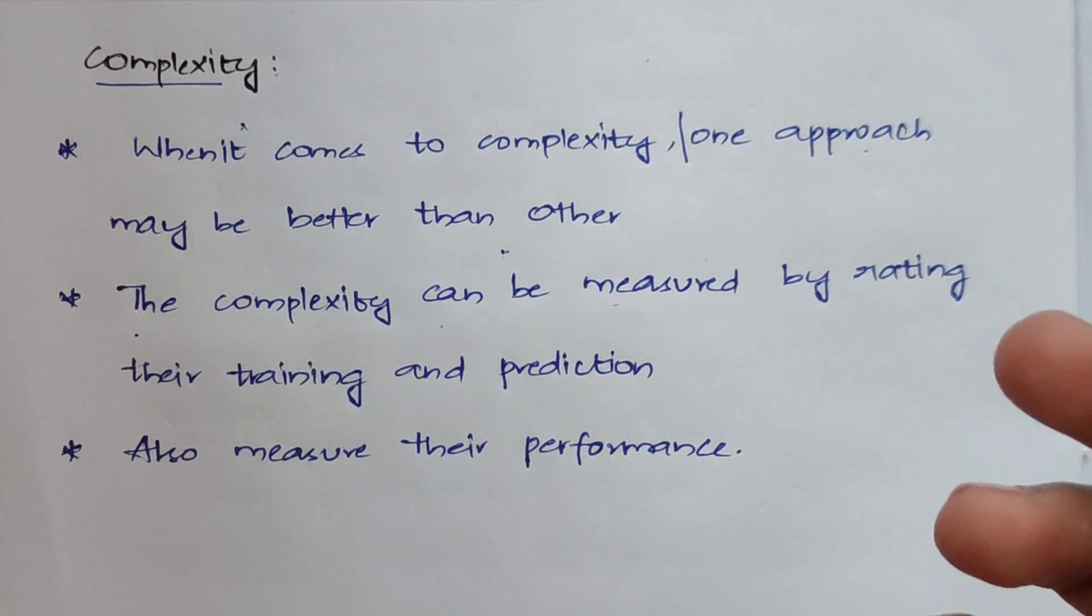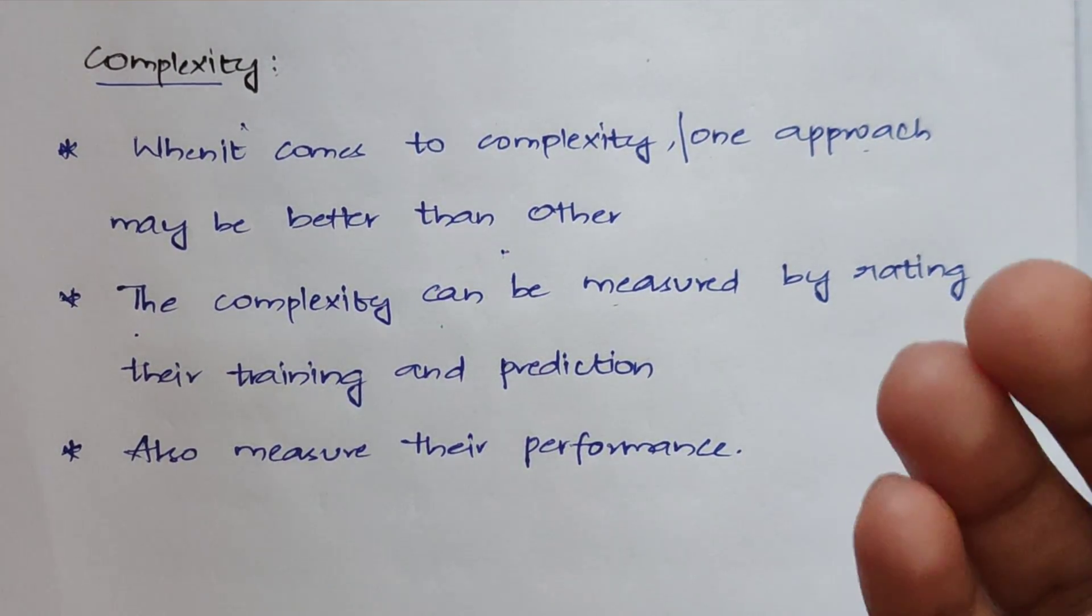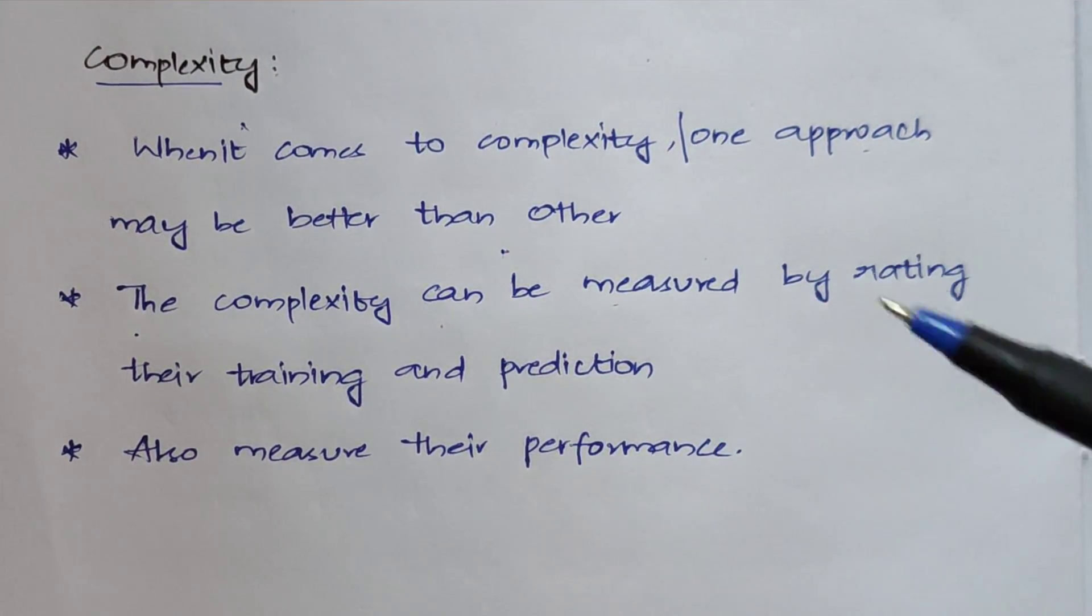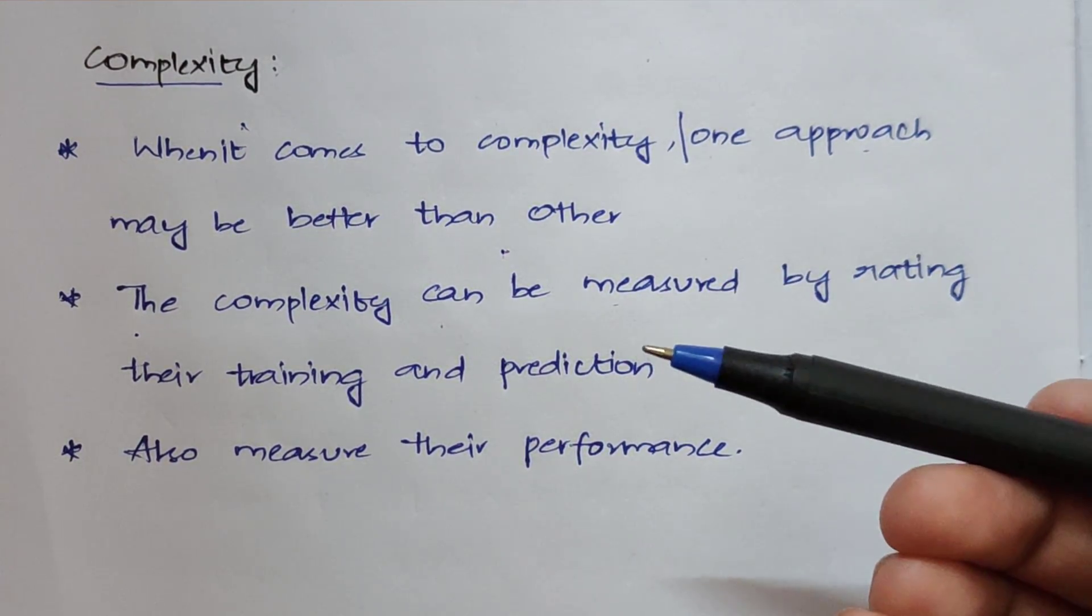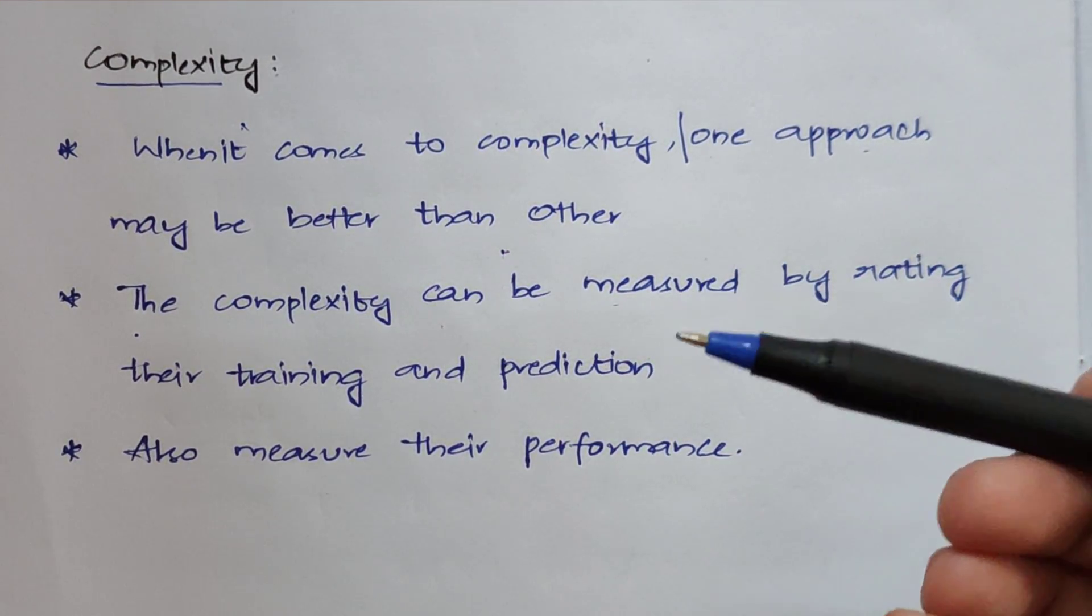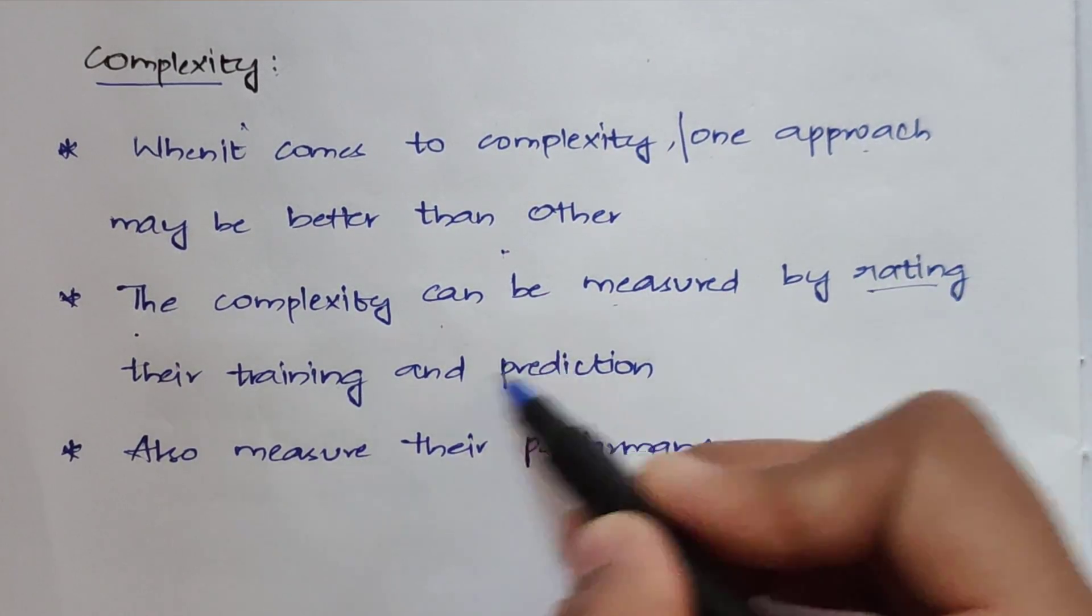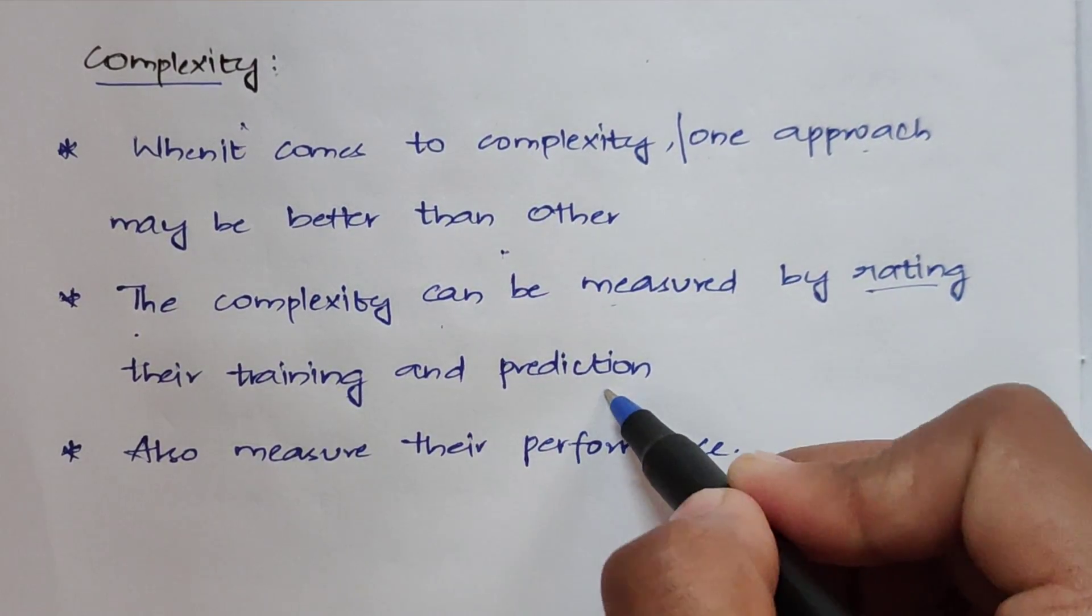Both things require training and prediction, right? First, they train with some examples, and then they predict based on the trained examples. They predict for new sequences from the training examples. So by rating the training and prediction...